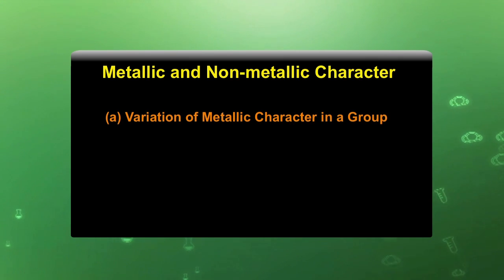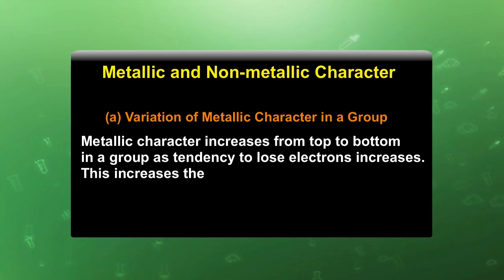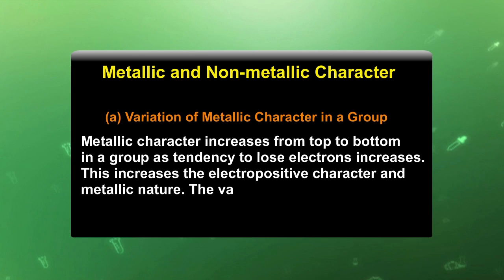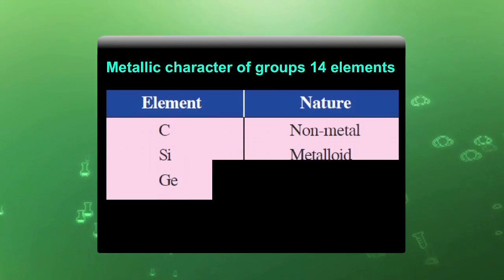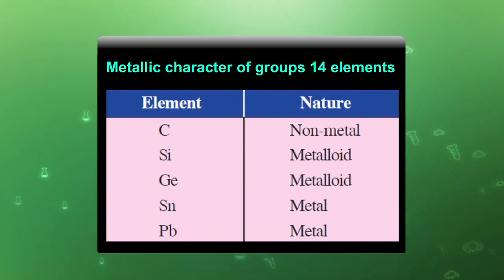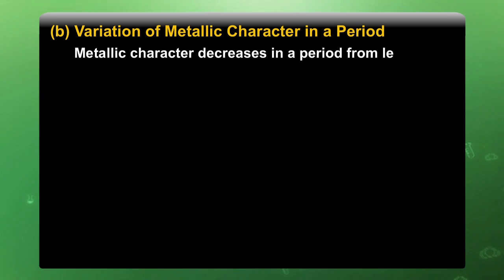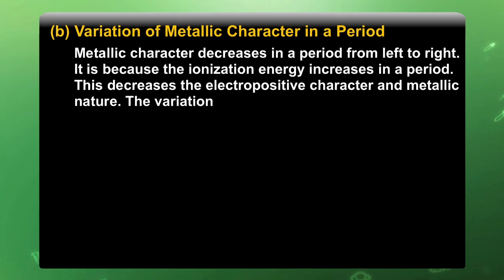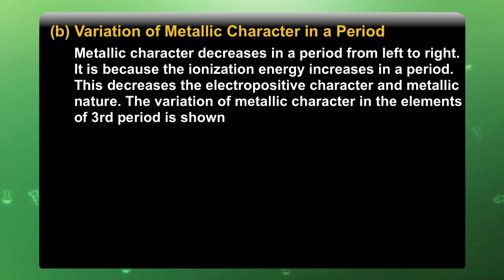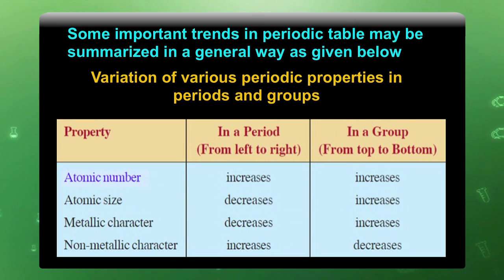Variation of metallic character in a group: metallic character increases from top to bottom in a group as the tendency to lose electrons increases. This increases the electropositive character and metallic nature. The variation can be seen in group 14. Variation of metallic character in a period: metallic character decreases in a period from left to right, because the ionization energy increases in a period, which decreases the electropositive character and metallic nature. The variation of metallic character in elements of the third period is shown below. This table indicates how atomic number, atomic size, and metallic and non-metallic character increases or decreases in groups or periods.